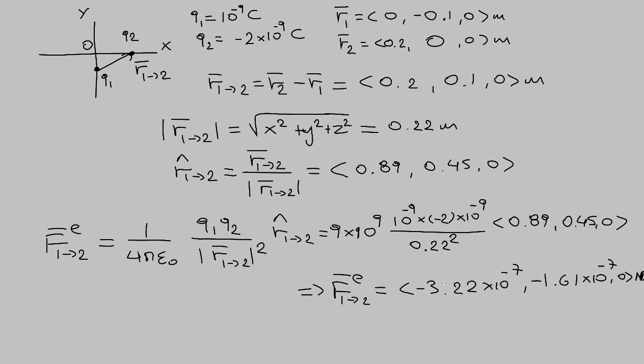Now let's see if this result makes sense. We got a negative x-component and a negative y-component. Looking back at our picture, Q1 is a positive charge and Q2 is a negative charge. Since those two charges have opposite signs, there is an attractive force between them. So the force on Q2 by Q1 points towards Q1, which is why we have a negative x-component and a negative y-component for the force. This is consistent with what we expect for an attractive force.